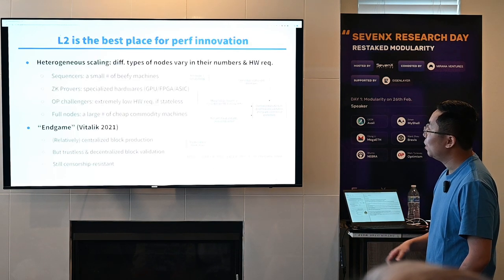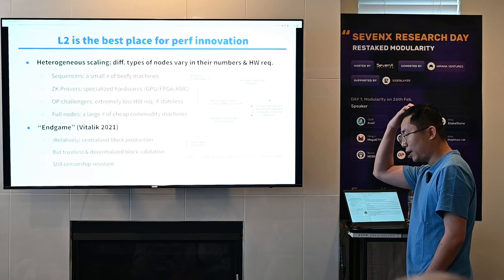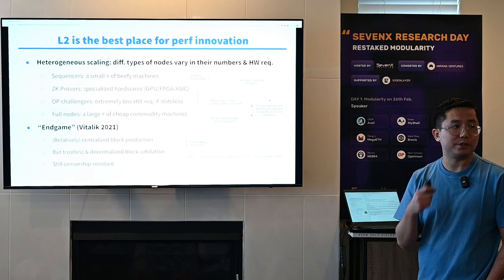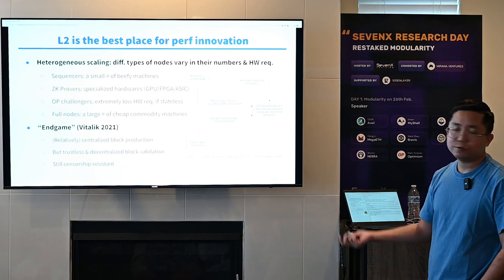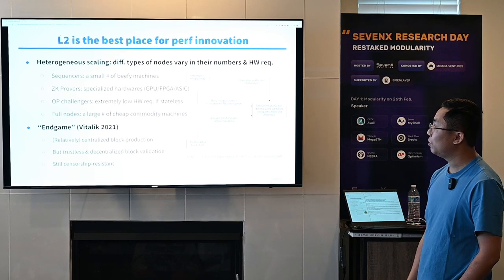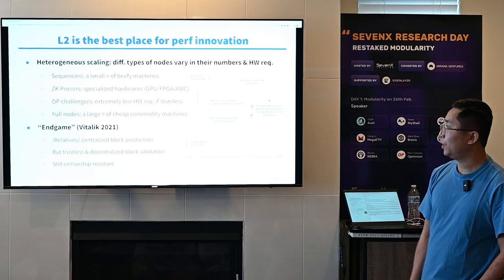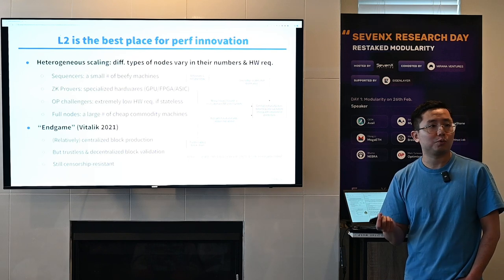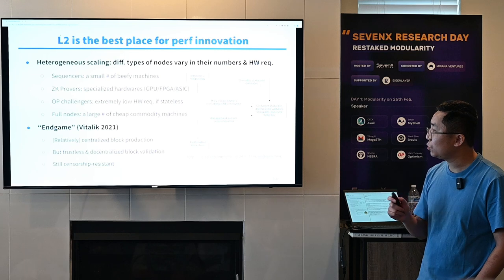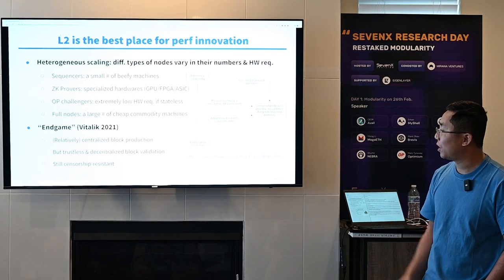At MegaEth, we believe L2 is actually the best place for performance innovation. The reason is that L2 enables heterogeneous scaling — different types of nodes can vary significantly in their numbers and hardware requirements. At layer two, you can have just a small number of sequencers, so you can afford to run them on very beefy machines. For ZK rollup, you have a prover that will run on specialized hardware to reduce proof generation cost. For OP rollup, if you design challengers to be stateless, their hardware requirements could be extremely low. And rollup full nodes don't need to re-execute transactions, so they can run on very cheap commodity machines — but there could be tens or even hundreds of thousands of them.